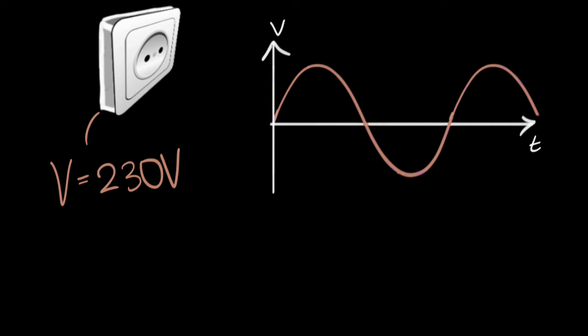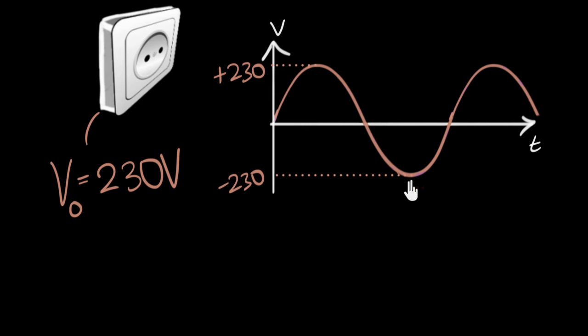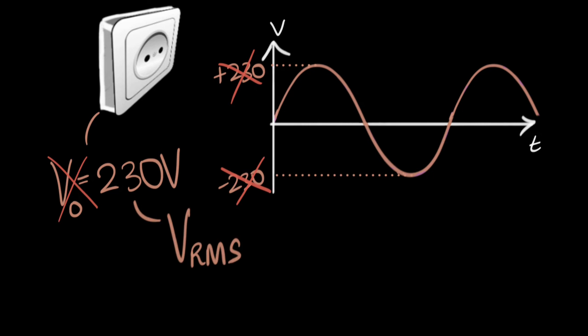At first I thought it must represent the peak value. But then I was surprised to see that that's wrong — that's not what it represents. In fact, it turns out that it represents something called the RMS value. And the goal of this video is to figure out what exactly this RMS value is and why we should care about it.